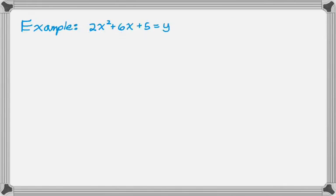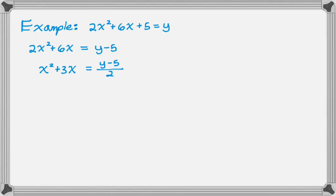Let's look at another example — I'm going to do this one two different ways. We don't have a leading coefficient of 1, so it's more complicated. First, move the constant term to the other side — constants don't really participate in the completing-the-square process right now. Then divide both sides by 2 to get a leading coefficient of 1, giving x squared plus 3x equals y minus 5, divided by 2. Now I want half of 3, which is 3 halves; squaring that gives 9 fourths. I add 9 fourths to both sides to keep the balance.